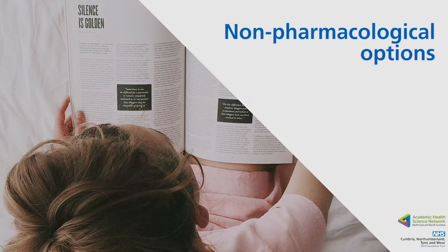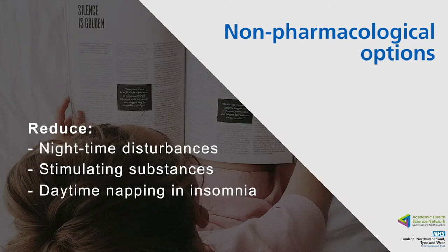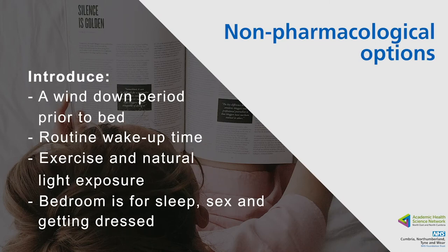Measures should be taken to address sleep disruptors. These quick wins are effective, but can be overlooked when staff are pressured for time and hypnotics reached for instead. Reducing nighttime disturbances, stimulating substances, and daytime napping for insomnia patients can all improve nighttime sleep. Drinking five or more cups of coffee a day, regardless of timing, causes caffeine to reach a steady state in the bloodstream. Reducing the number of cups per day is just as important as not drinking caffeine later in the day. One can of Coke contains the same amount of caffeine as an espresso. Decaffeinated drinks are not caffeine-free — they just contain less caffeine.